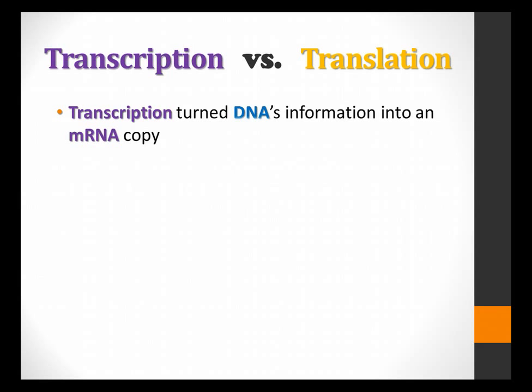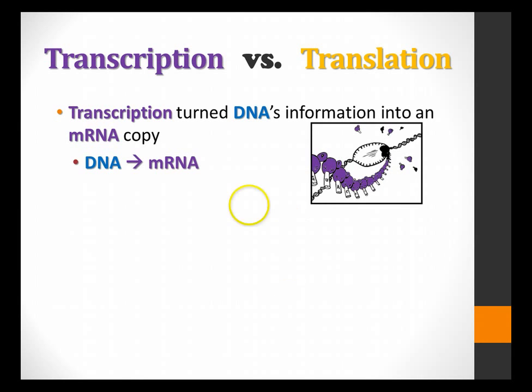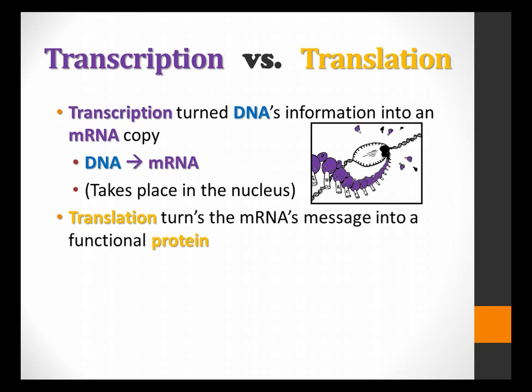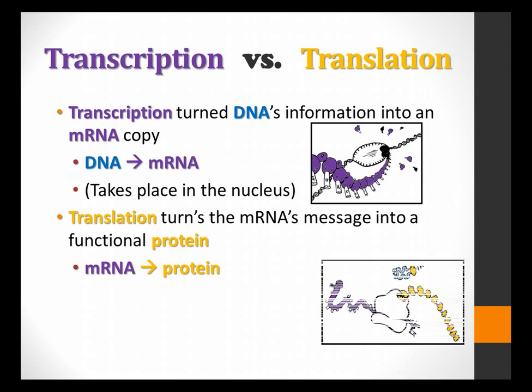All right, so let's compare transcription against translation. Transcription, as we said before, turns that DNA information into an mRNA temporary copy. So DNA to mRNA. So you remember this image before? That's my DNA in the background there, it's being split by RNA polymerase and it makes that mRNA strand. That part took place inside the nucleus. Well, let's talk about translation. Translation is going to take that mRNA message and turn it into a functional protein. So it goes from mRNA into protein. So here is our ribosome where protein assembly takes place. Here's the mRNA through it, and out of that is all those amino acids being built into a functional protein. This takes place in the cytoplasm of the cell.